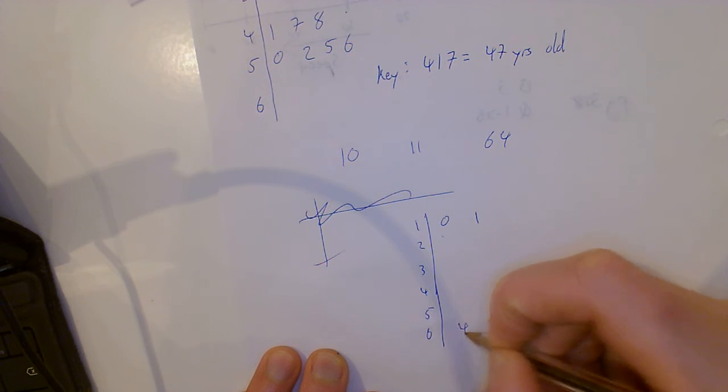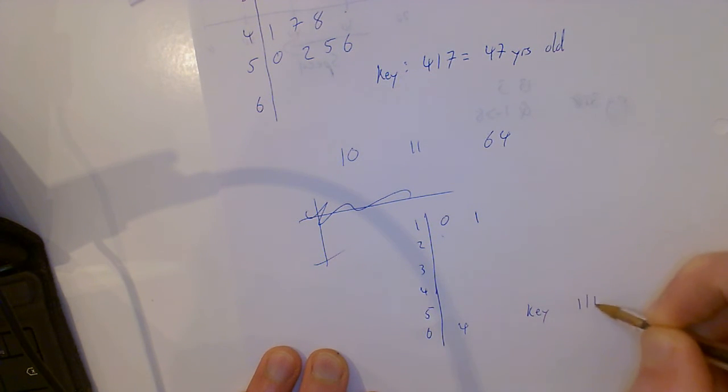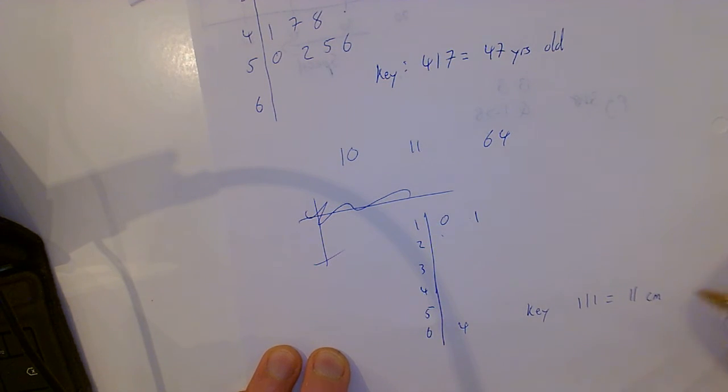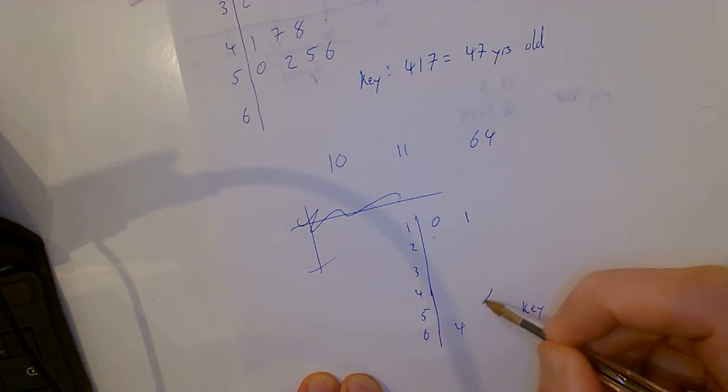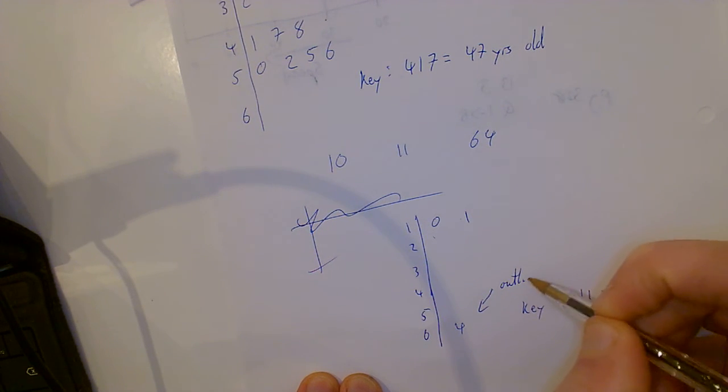And then 64 down here. Your key would go 1|1 is 11. Let's say this is centimeters of rain, days of the week. Now I can see from this that this is an outlier.